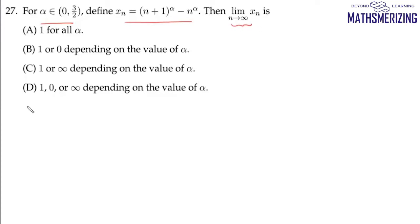If the value of alpha is 1, then clearly xn will be (n+1) minus n, which is 1. Taking the limit as n tends to infinity, it will simply be 1.